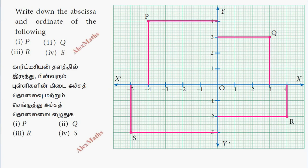Hi students, this is Alex here. In this problem, write down the abscissa and ordinate of the following. First is point P. Point P in your view here.